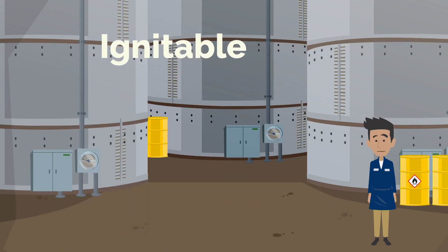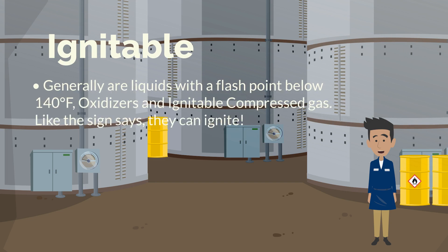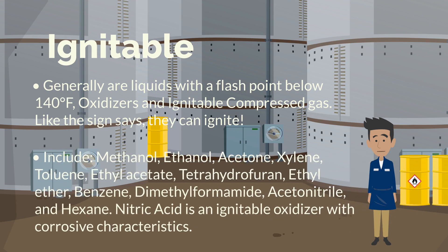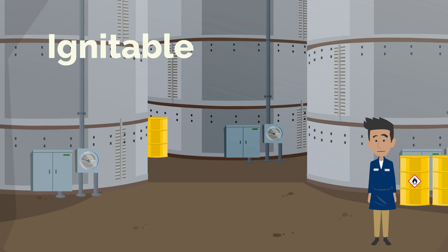Ignitable. These chemicals generally are liquids with a flashpoint below 140 degrees Fahrenheit, oxidizers, and ignitable compressed gas — like the sign says, they can ignite. Some common examples include methanol, ethanol, acetone, and others. Nitric acid is an ignitable oxidizer with corrosive characteristics. Look for this GHS symbol.